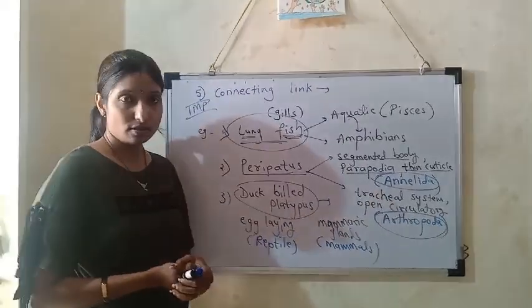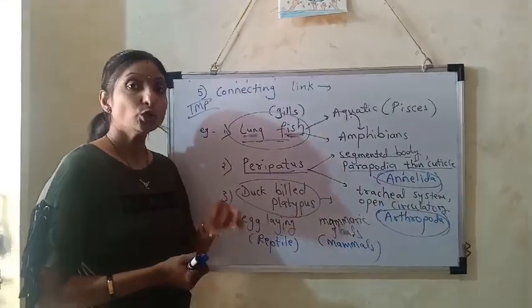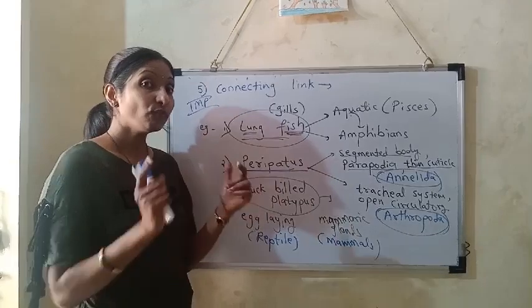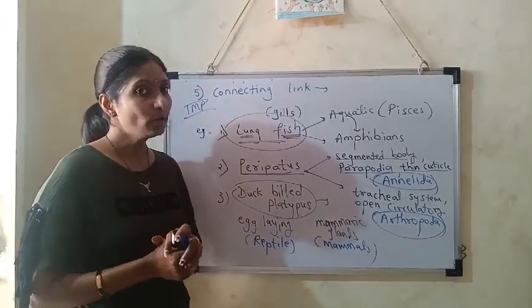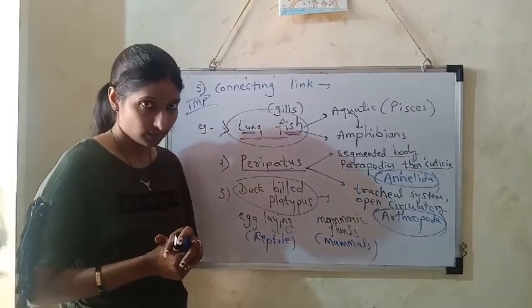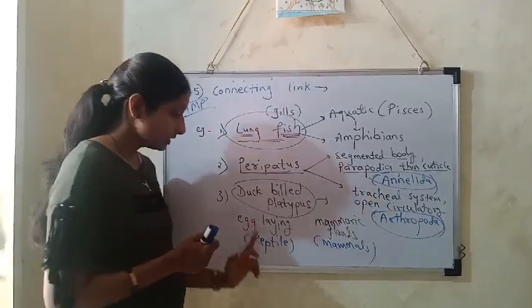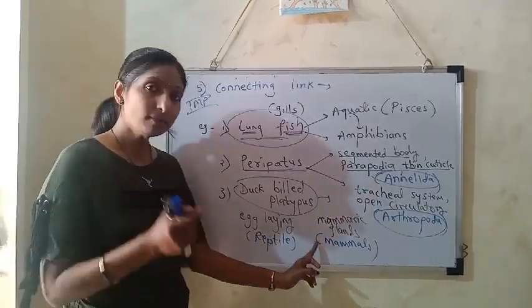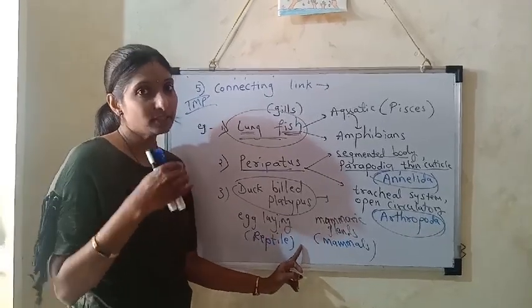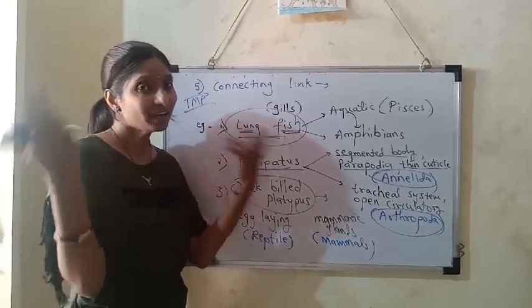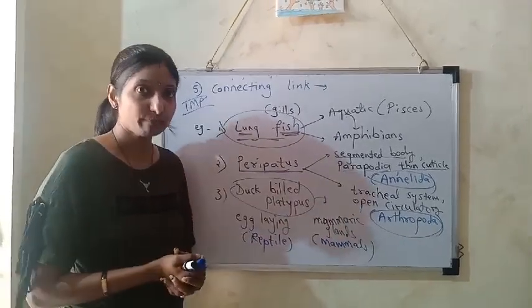This is our fifth evidence to prove that all living things have a common origin. Just like reptiles and mammals show similarities, it means we have evolved from each other.